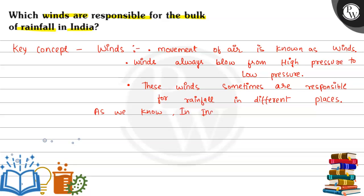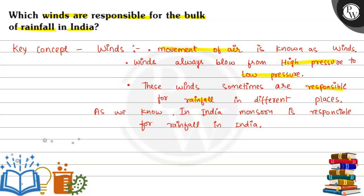In India, the monsoon winds — the monsoon — is responsible for the majority of rainfall in India. Now let's come to the main part of the question.